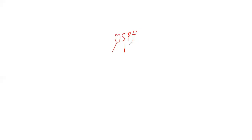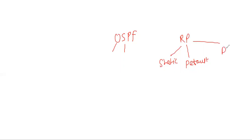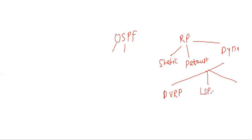OSPF is Open Shortest Path First protocol. Last time we already seen the routing protocols. In routing protocols there are three types: static routing protocol, default routing protocol, and dynamic routing protocol. In dynamic routing, there are also three types: distance vector routing protocol, link state routing protocol, and hybrid routing protocol.